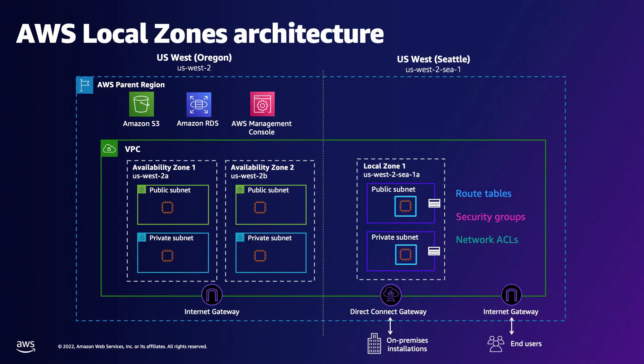For customers who need low latency or keeping their data in a specific location, how should they think about capacity planning with Local Zones? Similar to regions, customers don't need to worry about capacity management — AWS manages capacity in the background, and customers can use on-demand instances or reserve capacity. One thing to keep in mind is that Local Zones are smaller than regions, so customers planning large-scale migrations should work with their account teams to ensure their needs are met without surprises.